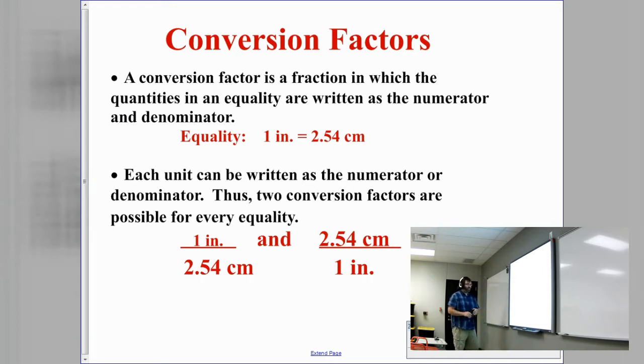Now for each equality though, since we have two numbers, two values in equalities, we can write each conversion, each equality as two different fractions. So for example, if I have one inch equals 2.54 centimeters, I can write that as two separate fractions depending on which direction I want to go. If I want to go from centimeters to inches or inches to centimeters. So again, two conversion factors for each equality.